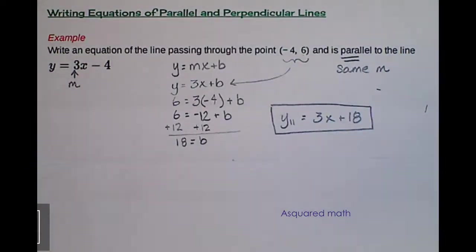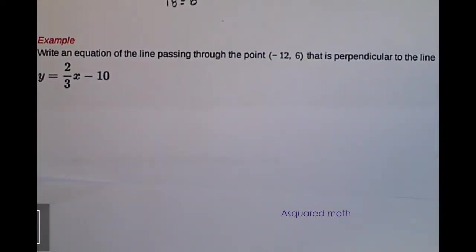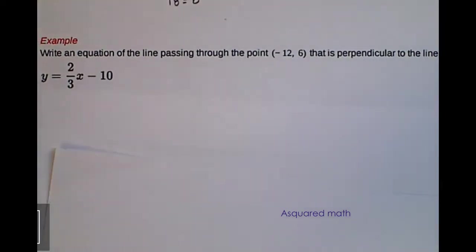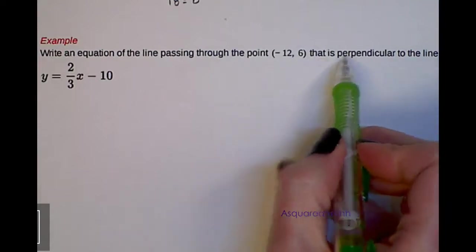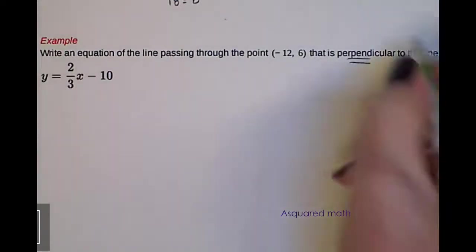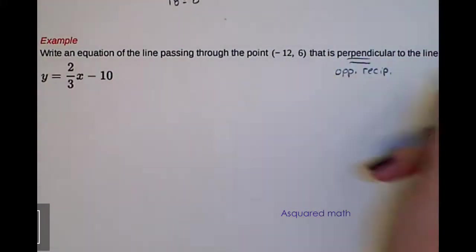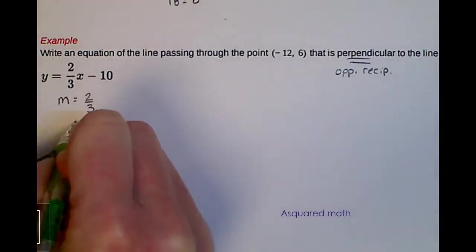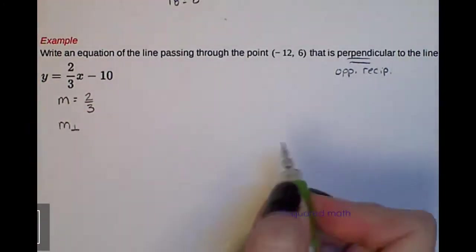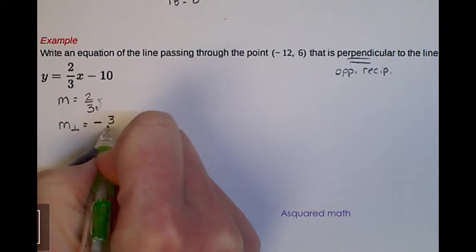The next example has us working with finding the equation of the line that's perpendicular through a particular point. So we have a different given equation here. And it says to write an equation of the line passing through the point negative 12, 6 that is perpendicular to the line. So we're working with the opposite reciprocal. So our slope here is 2 thirds. So that means our slope perpendicular is the opposite reciprocal, positive becomes negative, flip-flop the numerator and denominator, so we end up with negative 3 halves.